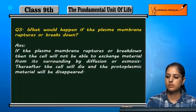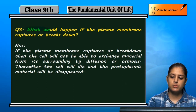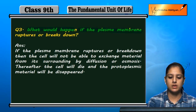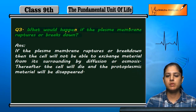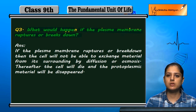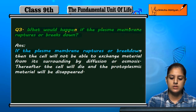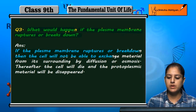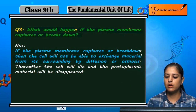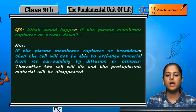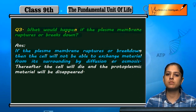Question 3: What would happen if the plasma membrane ruptures or breaks down? If the plasma membrane ruptures or breaks down, then the cell will not be able to exchange material from its surroundings by diffusion or osmosis. The role of the plasma membrane is the exchange of material from surroundings via diffusion or osmosis.